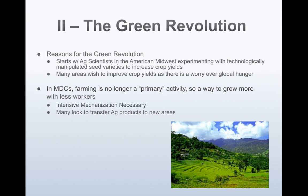Reasons for the Green Revolution: it starts with agricultural scientists in the American Midwest experimenting with technologically manipulated seed varieties to increase crop yields — literally how productive a unit of land can be. Many areas wished to improve crop yields due to worry over global hunger. In more developed countries, farming is no longer a primary activity, so there was a need to grow more with fewer workers — hence intensive mechanization: crop sprayers, combines, large tractors. There was also a push to transfer agricultural products into new and marginal areas to bring more land into production.